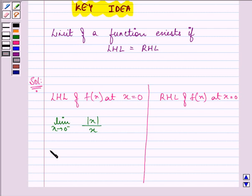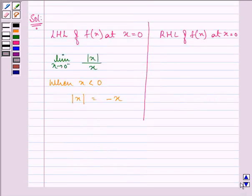When x is less than 0, then |x| equals negative x.